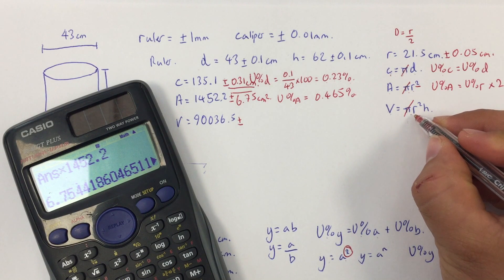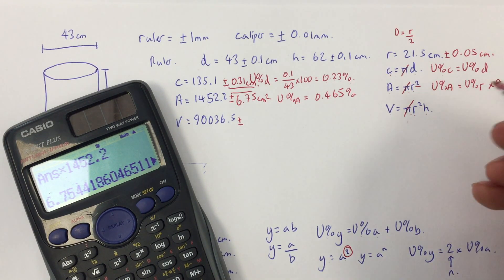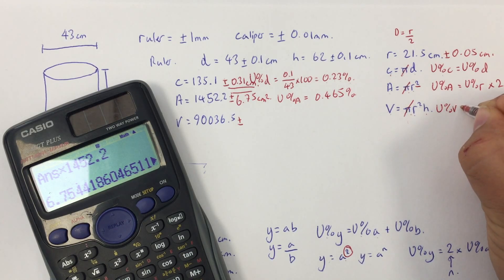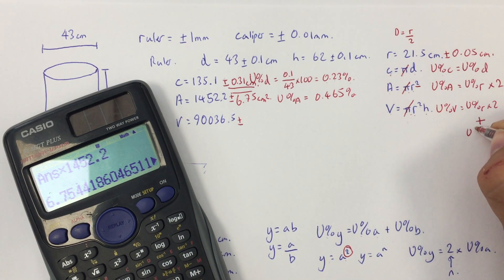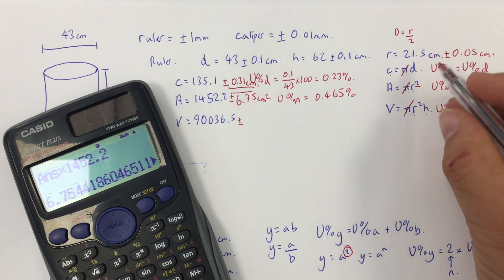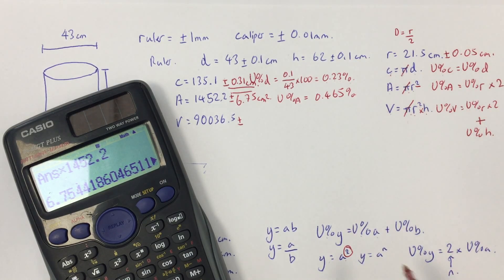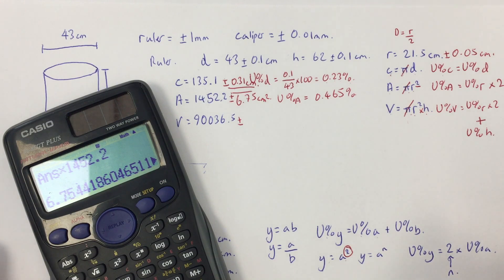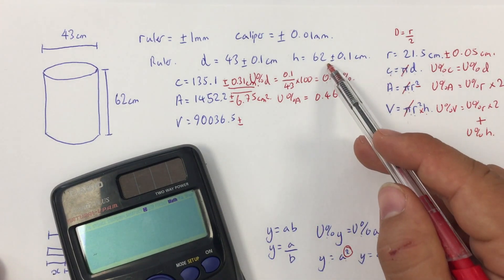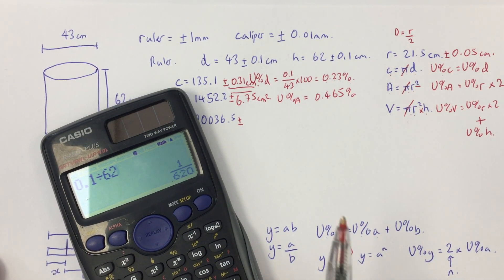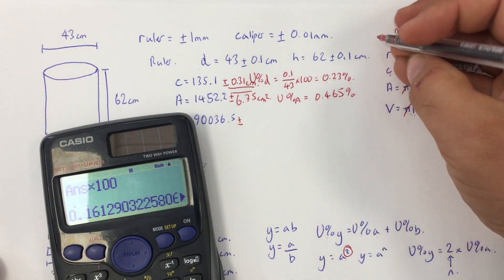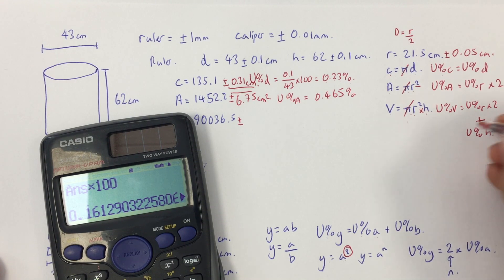For the volume, the equation has radius squared and height multiplied together. The percentage uncertainty in volume is the percentage uncertainty in R times 2 — same as before — plus the percentage uncertainty in H. The percentage uncertainty in H is 0.1 divided by 62 times 100, which equals 0.16%.